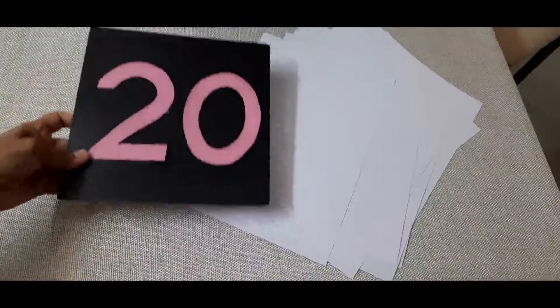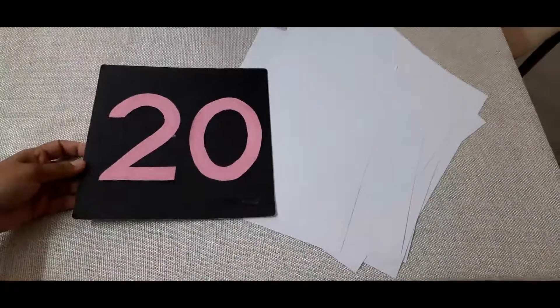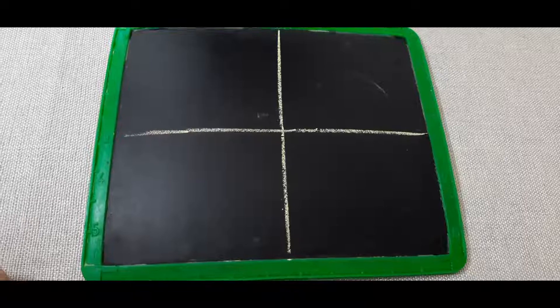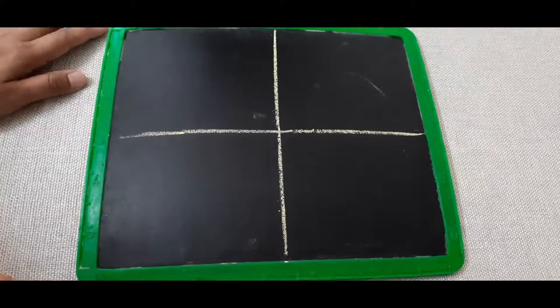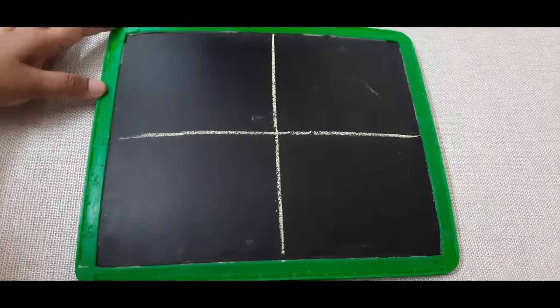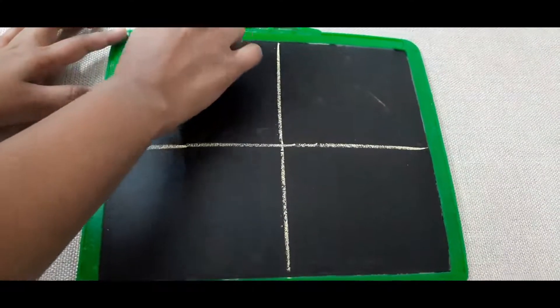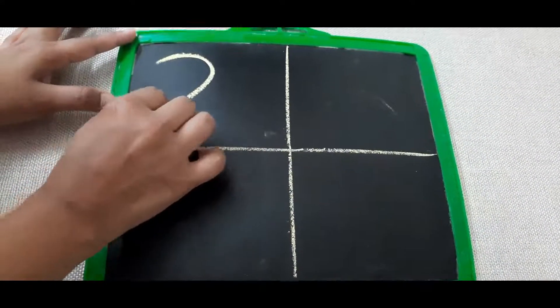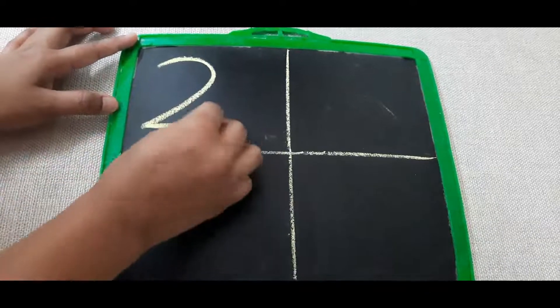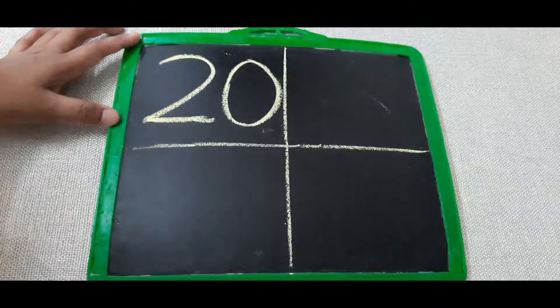20! Number 20 — there are 20 papers here. Now let's learn how to write number 20. What makes number 20? 2 and 0 — 20! First you write 2: left open curve and a sleeping line. Then 0. 2, 0 — 20!